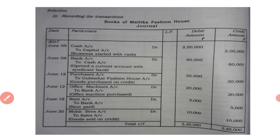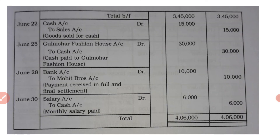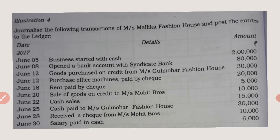June 22: cash sales — cash account debited to sales account; sales is credited because it is income. Debit 15,000, credit 15,000. Narration: being goods sold for cash.